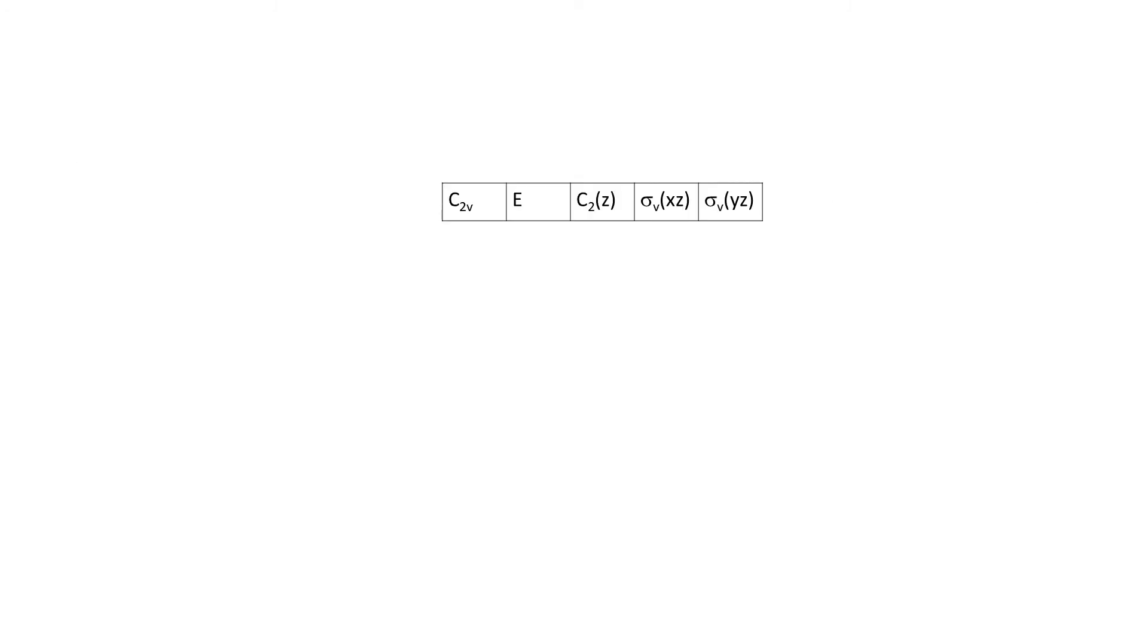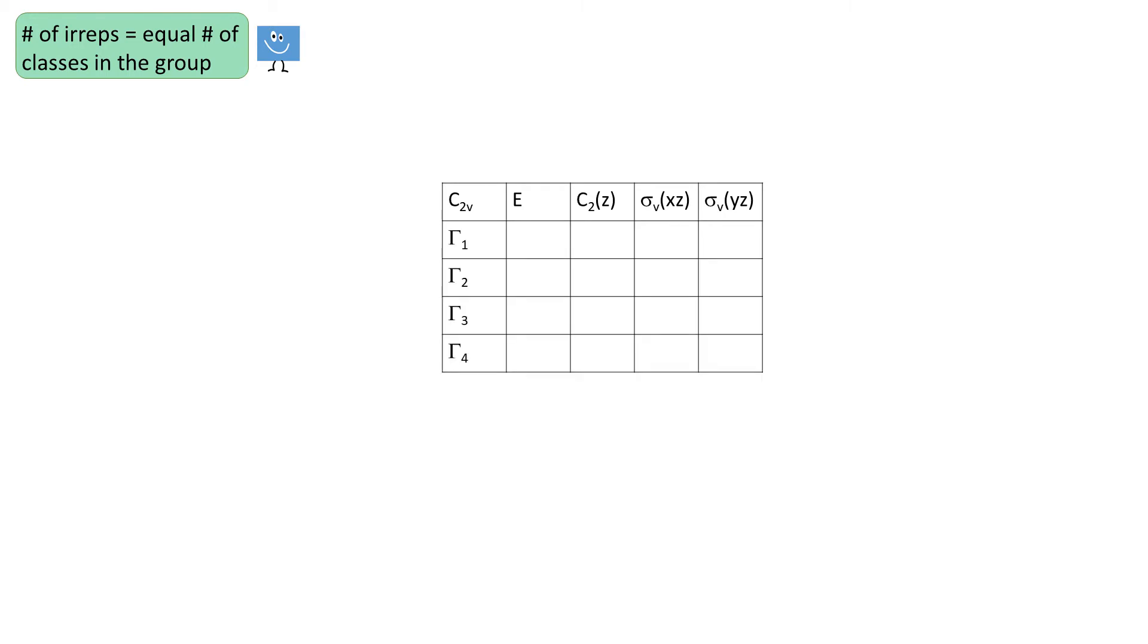Our first example is C2V. C2V group has 4 elements, each one in a separate class. So the rule 5 tells us that the number of EREPs of a group is equal to the number of classes in the group. So we have 4 EREPs. What do we know about these EREPs?